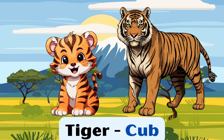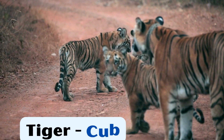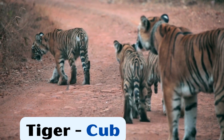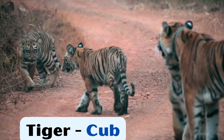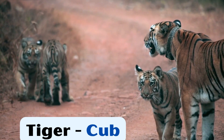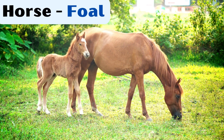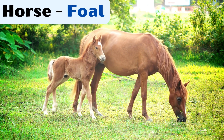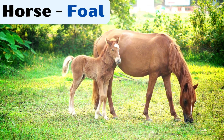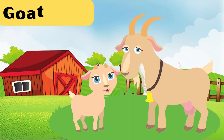The baby tiger is called cub. The baby horse is called foal.